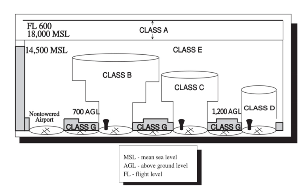The world's navigable airspace is divided into three-dimensional segments, each of which is assigned to a specific class. Most nations adhere to the classification specified by the International Civil Aviation Organization, though they might use only some of the classes defined, and significantly alter the exact rules and requirements. Similarly, individual nations may also designate Special Use Airspace with further rules for reasons of national security or safety.